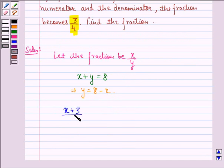Also, according to the question, x plus 3 upon y plus 3 is equal to 3 upon 4. Now this we call equation 1.